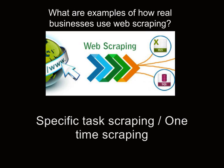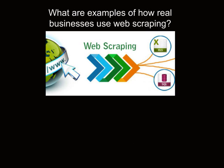Special task scraping, or one-time scraping, is when you need data from a particular website for a very specific purpose just one time. Almost all businesses use it — for example, scraping Amazon for a specific category of books, or scraping Reddit for particular keywords to get all the info about when and why people are using that keyword.